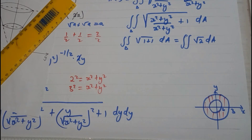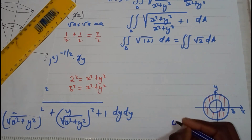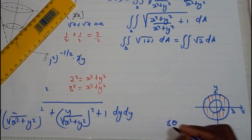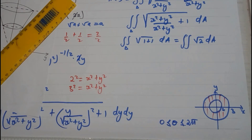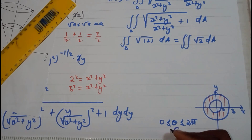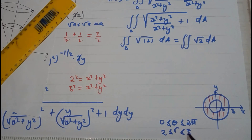I'll use polar coordinates since rectangular coordinates would be very tricky. Theta ranges from 0 to 2π. The radius r ranges from 2 to 3, not from 0, because we have an annular region. And dy dx in polar coordinates becomes r dr dθ.